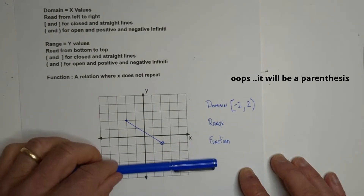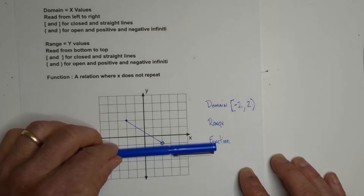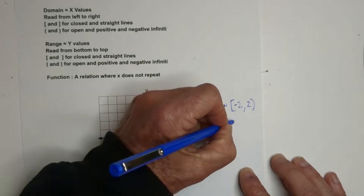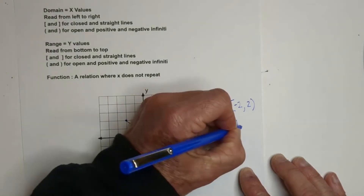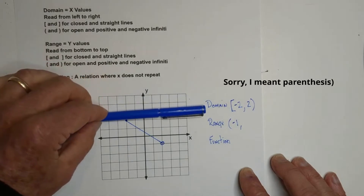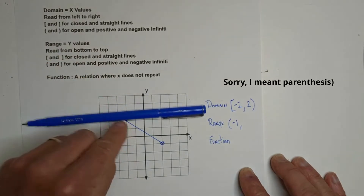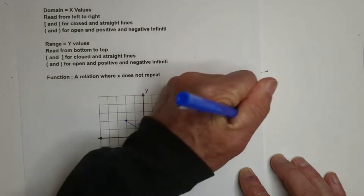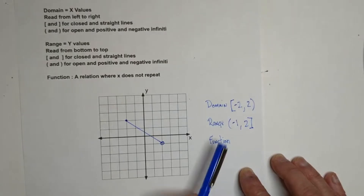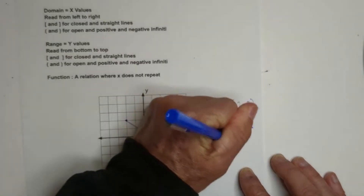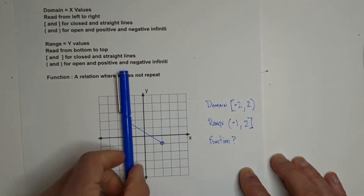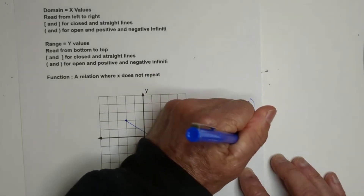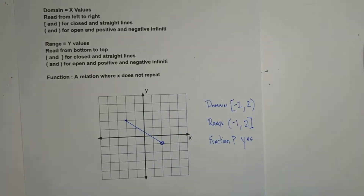For the range, go from the bottom and move up. It touches at negative one, and it is open, so we have a parenthesis at negative one. Then coming down from the top, it looks like positive two and it is closed, so we use a bracket. The range is (-1, 2]. And is it a function? It passes the pencil test because it does not touch it in two places, so the answer is yes.